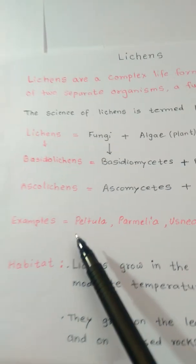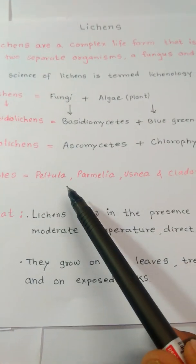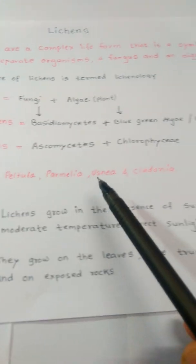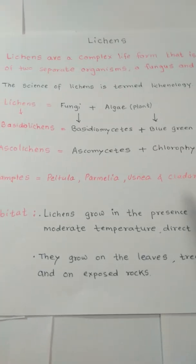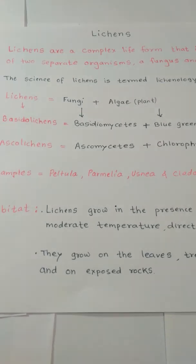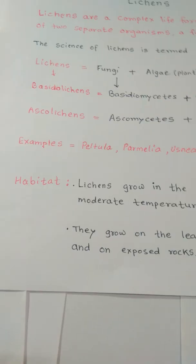Some examples of Lichens are: Peltula, Parmelia, Usnea, and Cladonia.